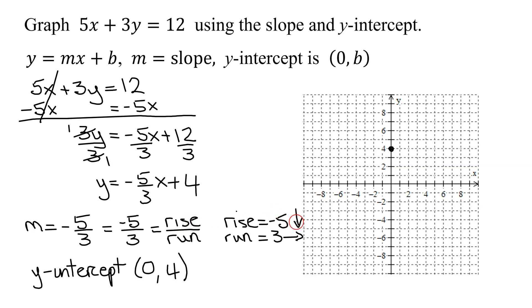We always like the sign to go with the rise. If the rise is positive, we go up. If the rise is negative, we go down. So I'm going to start at my y-intercept and go down 5 and to the right 3. So 1, 2, 3, 4, 5, and then right 1, 2, 3. There's my next point. Go down 1, 2, 3, 4, 5, and to the right 3: 1, 2, 3.